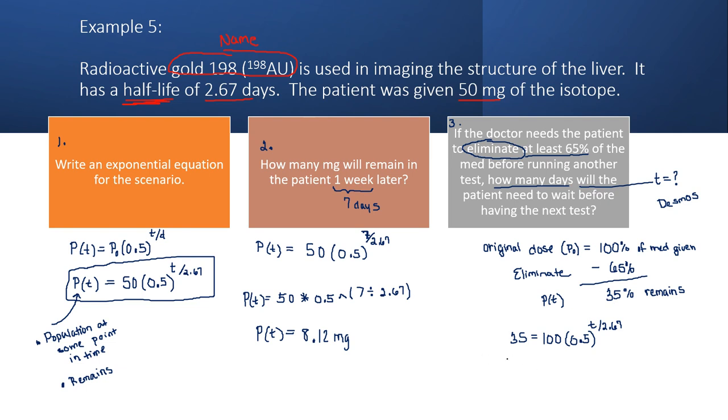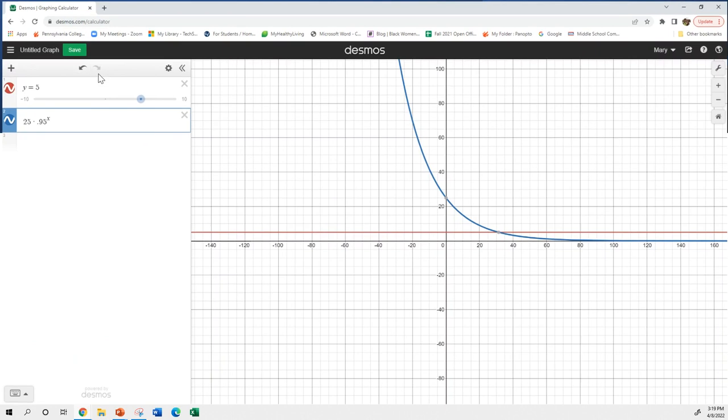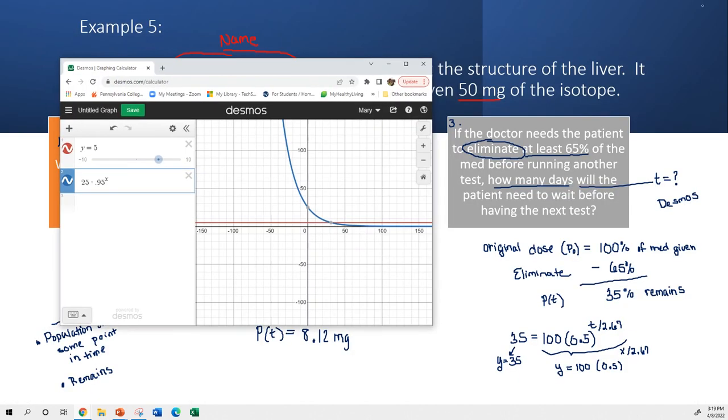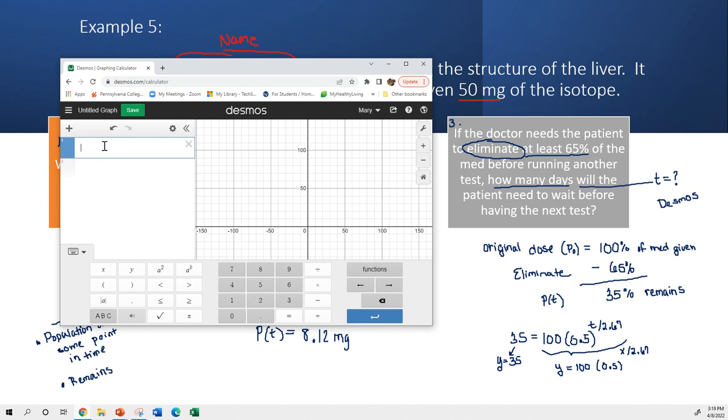So then we use the P zero is they took 100% of the dose, and the P(t) 35% is remaining. Now I want to solve this on Desmos, which requires two equations. So I'm going to use y equals 35 as the equation for the left-hand side of the formula. First equation, y equals 35.